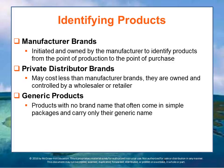Private distributor brands, which may be less expensive than manufacturer brands, are owned and controlled by a wholesaler or retailer, such as Pantry Essentials from Safeway, Great Value from Walmart, or Members Mark from Sam's Club.